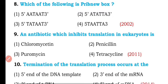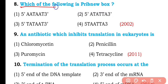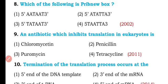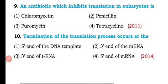Question number eight. Which of the following is the Pribnow box? The Pribnow box is a consensus sequence at the -5 position, with the TATA sequence at -3.